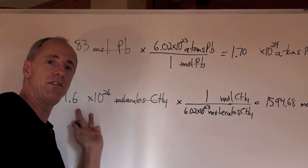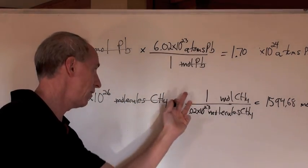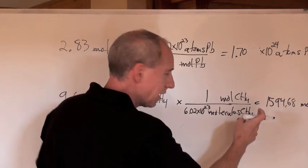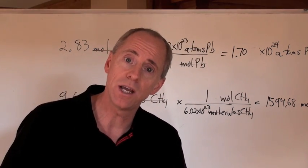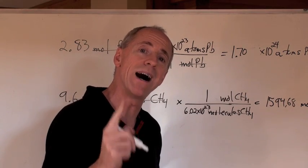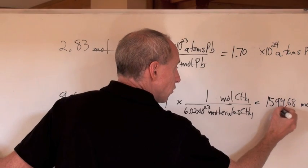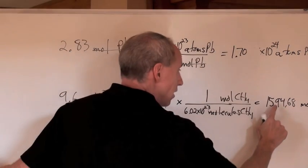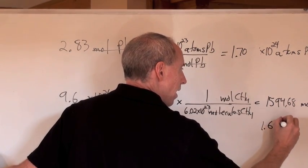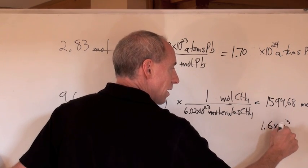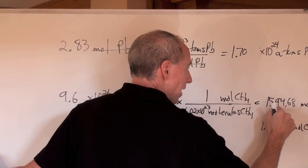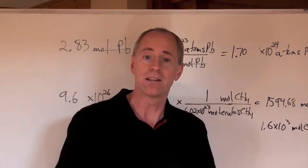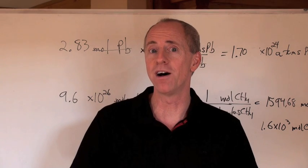Wait — there are two significant digits in 1.96 times 10 to the 26, three in 6.02, and infinite in the ratio. So you keep two significant digits. You need scientific notation: move the decimal three places, and you get 1.6 times 10 to the 3 moles of CH4 — essentially 1,600 to two significant digits. That's how we handle sig figs in these mole questions.